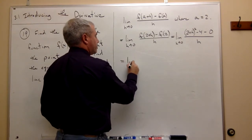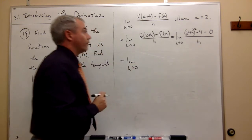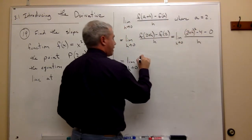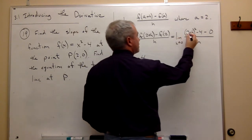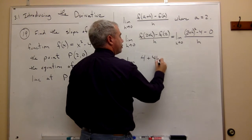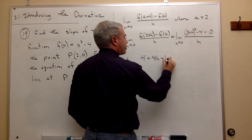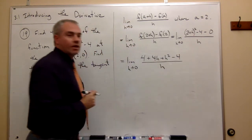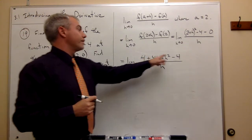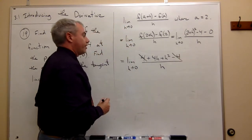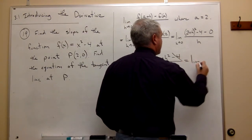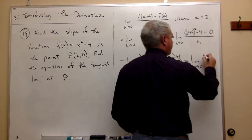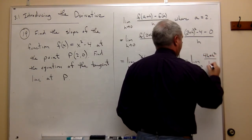So let's rewrite. This is the limit as h goes to 0 of: if I square (2+h), I get 4, plus 2 times the first times the second gives 4h, plus h squared, minus 4, divided by h. And you can see right away that the 4 and the minus 4 cancel each other out. So all that I'm left with is the limit as h goes to 0 of (4h + h²) / h.